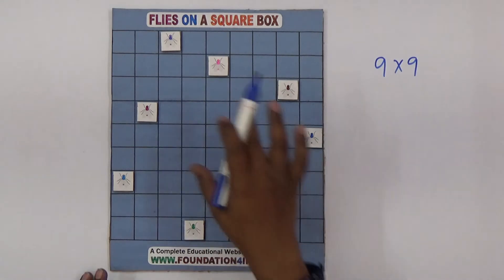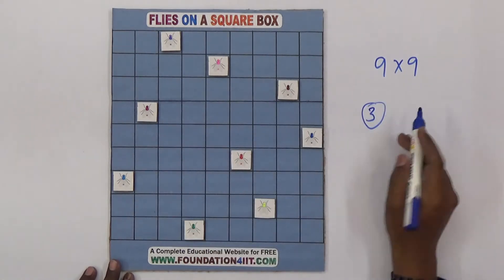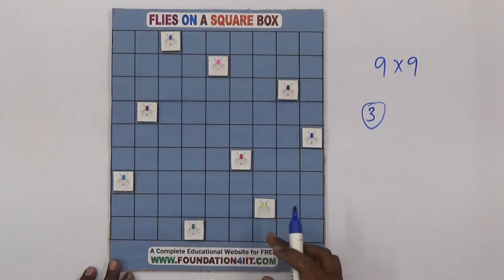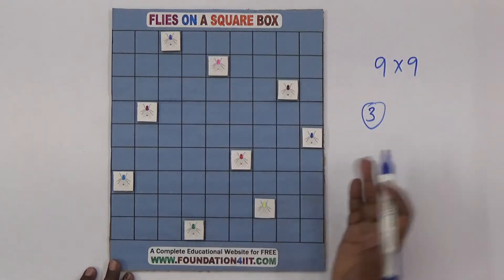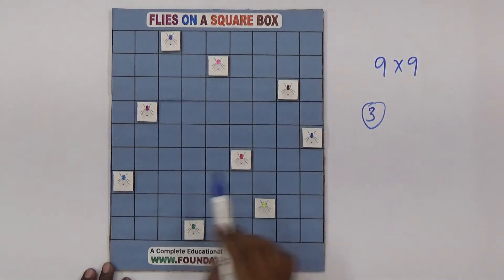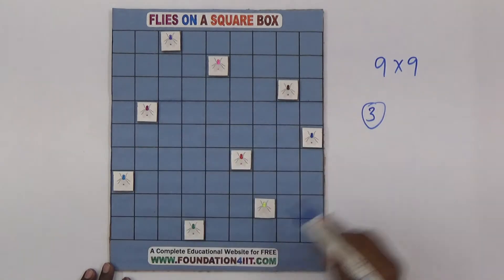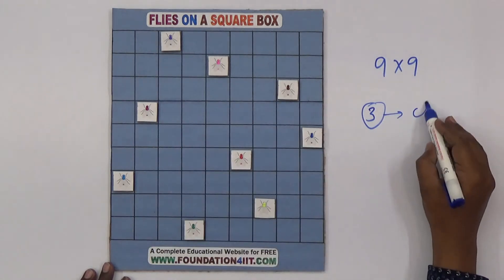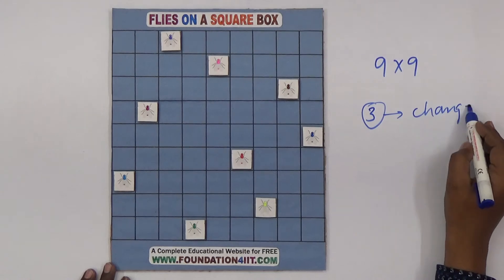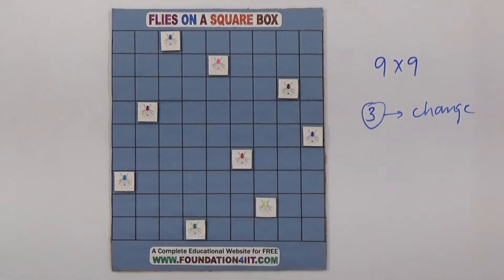Now the question is: out of these nine flies, three of them will change their positions. Any three flies change their position, and even after moving, there should be no interaction with other flies in the rows, columns, or even the diagonal. We need to find which three to change — try it yourself before I show you the solution.